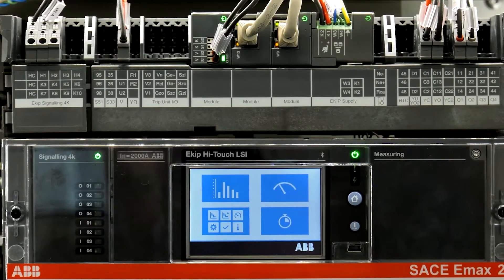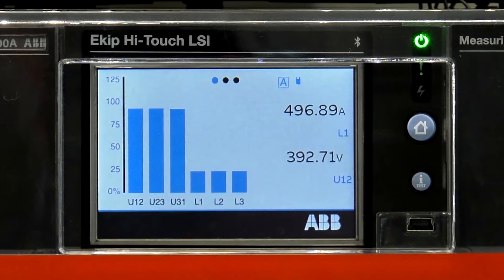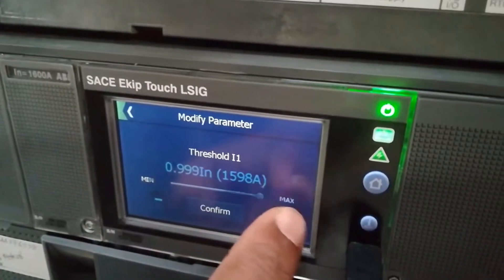E-KIP trip units transform your breaker into a power manager with an all-in-one solution to manage your low voltage distribution system.